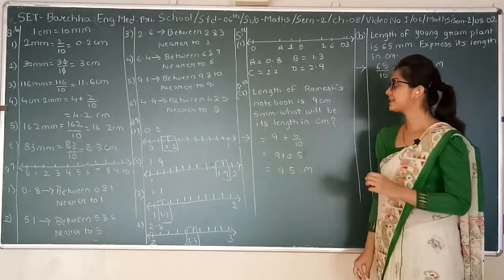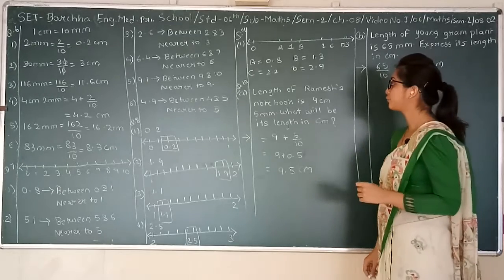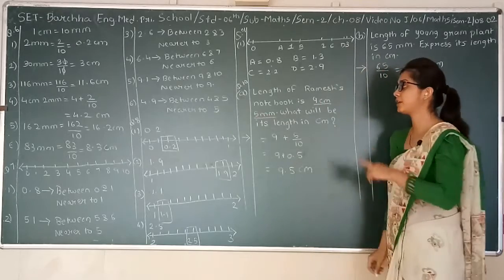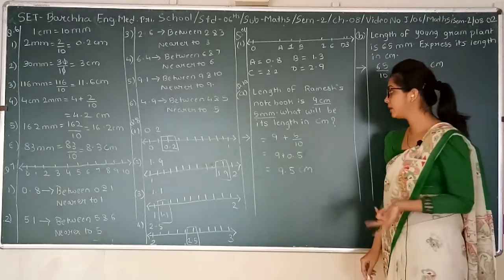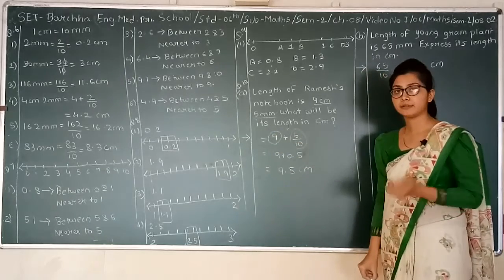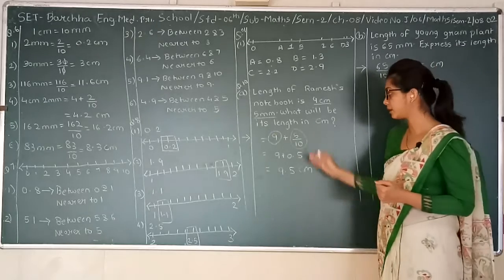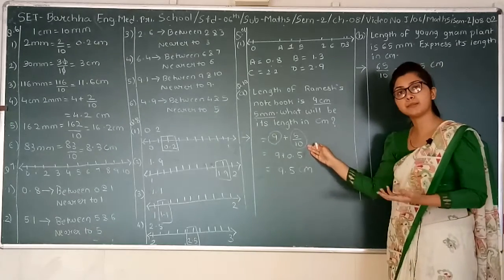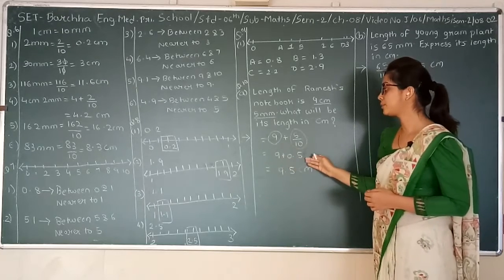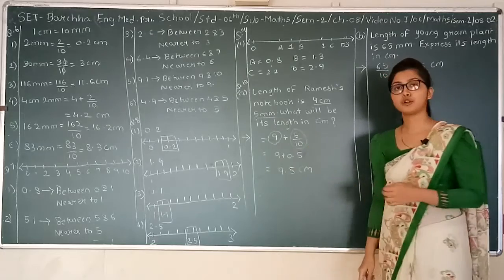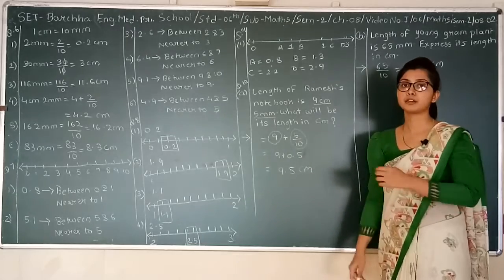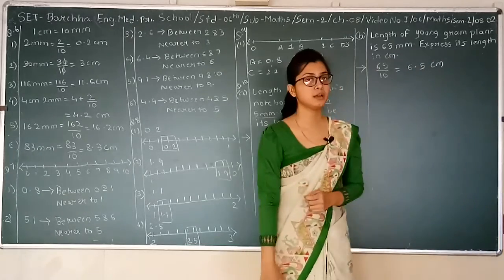Question number 9. We have to convert 9 cm and 5 mm into centimeters. 9 is already in cm. We only have to convert 5 mm, which is 5 upon 10, equal to 0.5 cm. So 9 plus 0.5 gives us 9.5 cm as the answer.